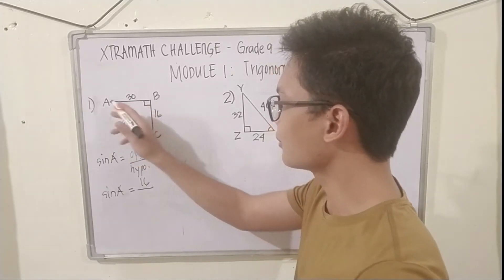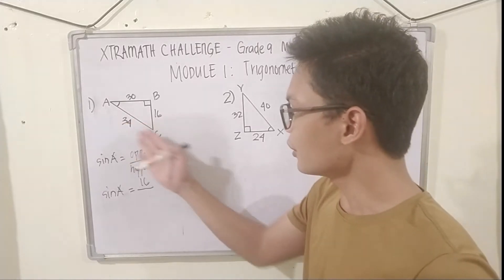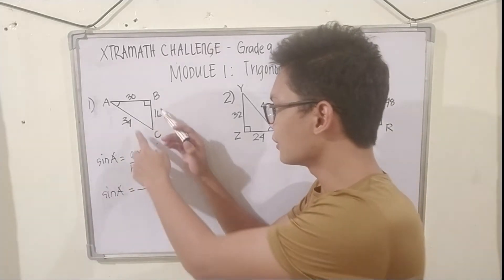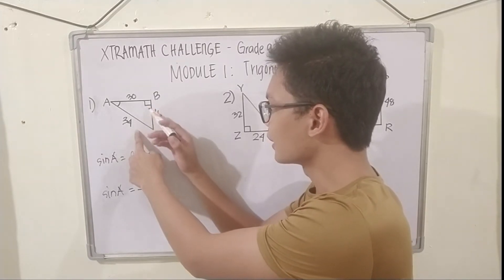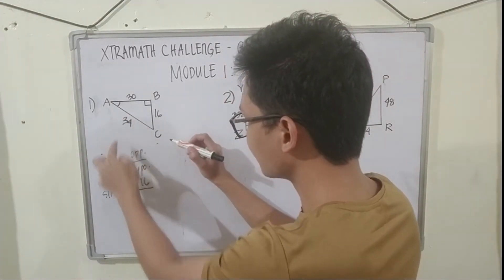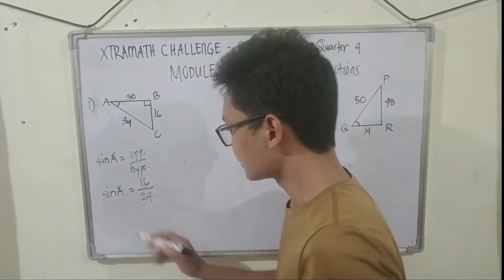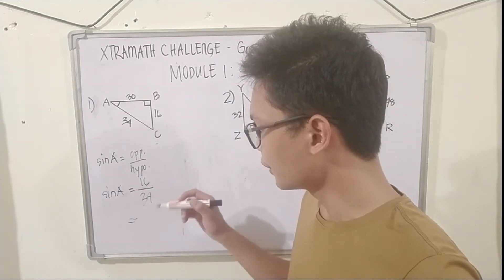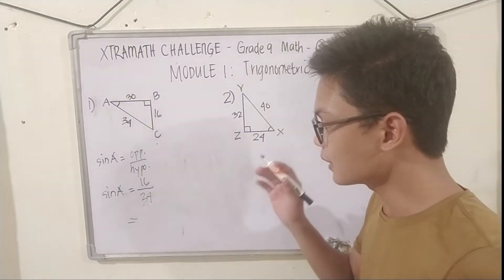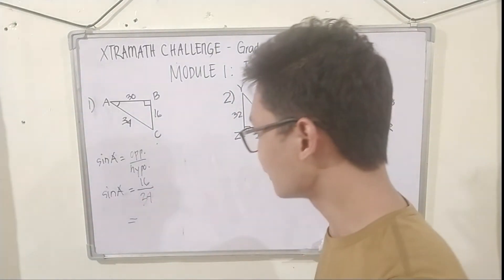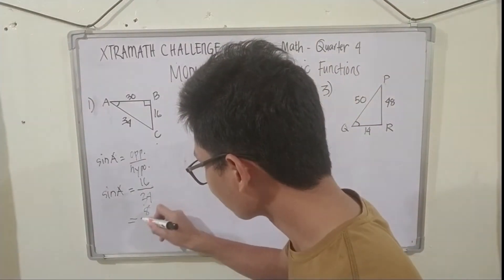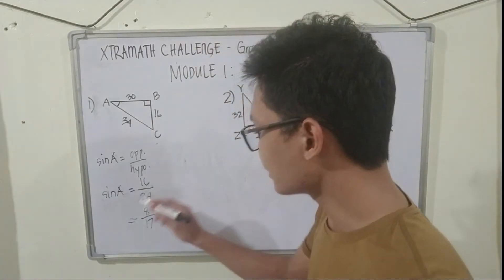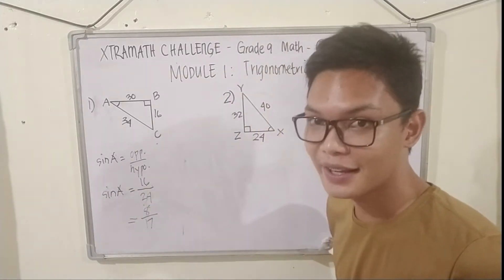The hypotenuse is always opposite the 90-degree angle in a right triangle. Our hypotenuse here is the longest side, which is 34. So sine A is equal to 16 over 34. Since we have 16 over 34, we reduce it to its lowest term by dividing both numerator and denominator by 2. So 16 divided by 2 is 8, and 34 divided by 2 is 17. Therefore, 8 over 17 is the ratio of sine A.